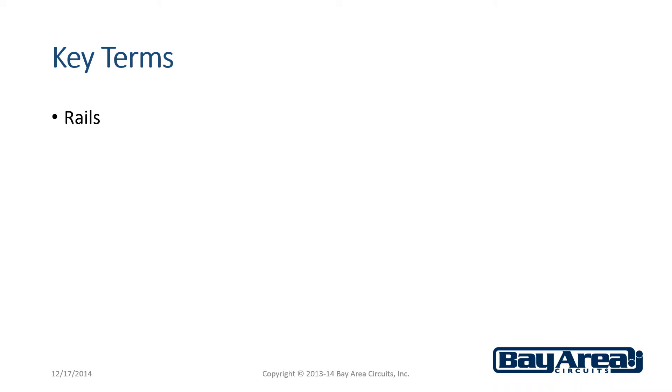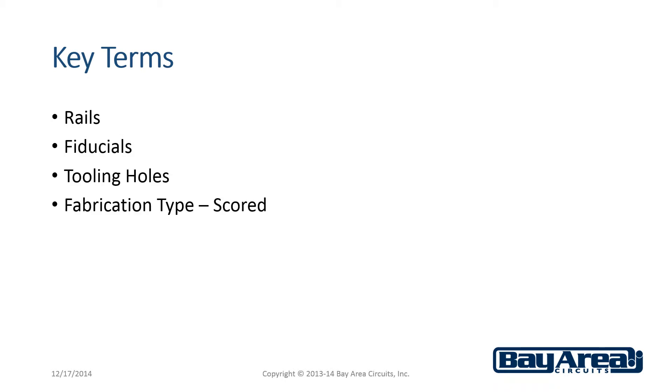There are also some key terms that we're going to talk about in this video. Those are rails, fiducials, tooling holes, and the fabrication types of scored and tab routed.